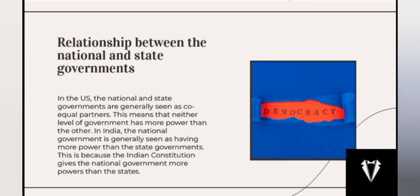Next is the relationship between the national and state governments. In the United States, the national and state governments are generally seen as co-equal partners, meaning neither level has more power than the other, and they often work together to solve problems. In India, the national government is generally seen as having more power than the state government, as the Indian constitution grants the national government greater authority. The national government takes the lead on important topics requiring uniformity throughout the country, as seen in the Union List covering matters like national security and foreign exchange.